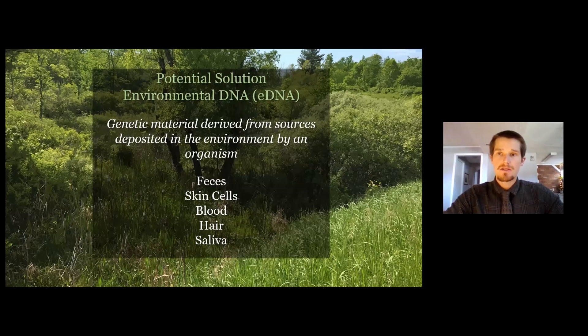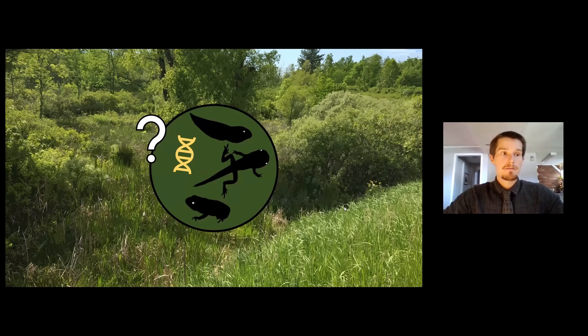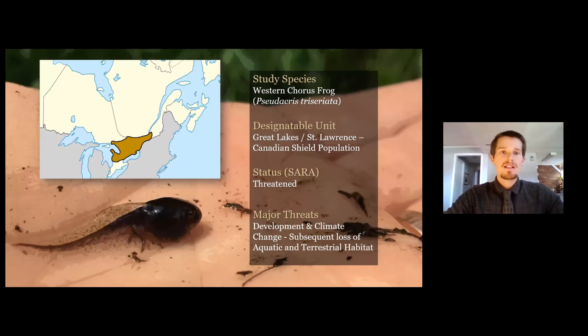One potential solution is sampling environmental DNA, or eDNA—genetic material derived from sources left in the environment by living organisms. Using eDNA, we can potentially detect target species during periods of low activity or when impossible to detect using traditional methods. The target species is the western chorus frog, specifically the Great Lakes-St. Lawrence Canadian Shield population, currently listed as threatened under the Species at Risk Act due to loss or degradation of aquatic breeding habitat from development and warming spring temperatures.